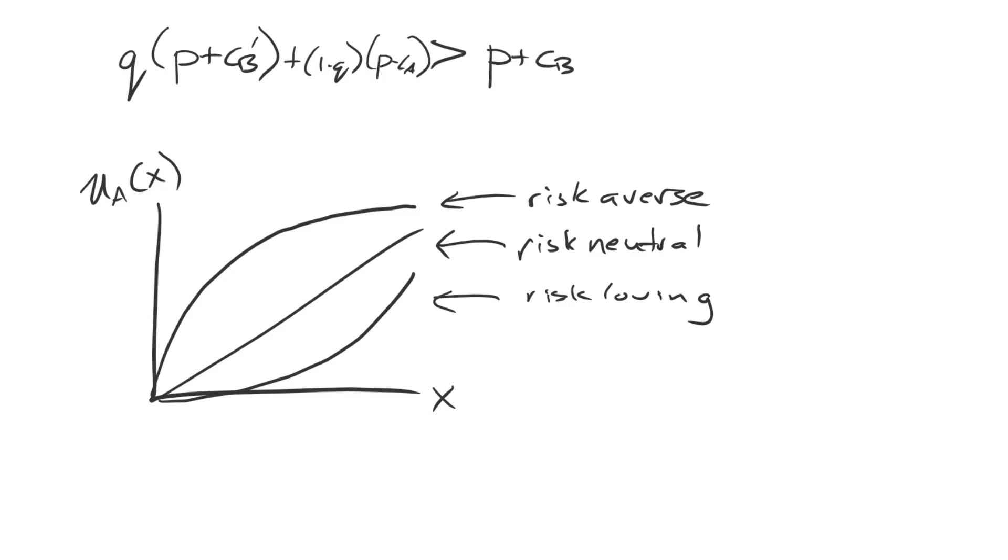There's also another case that you might think of which is risk-seeking or risk-loving, risk-acceptant. Where you don't care at all about the initial amount and you really care a lot about getting a lot. Well, this is something more akin to the preferences of a compulsive gambler. It's something that could happen. It's just not something that we focus too much on in the crisis bargaining literature.